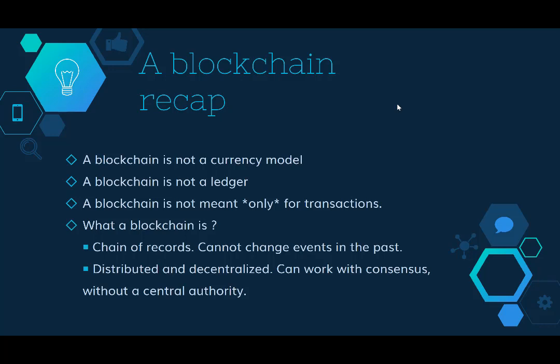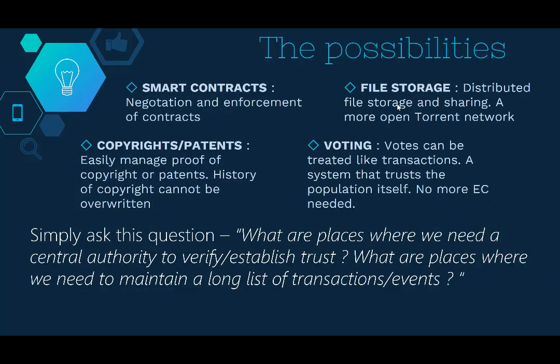A blockchain is simply a chain of events, a chain of records that is distributed and decentralized — meaning anybody can help continue the chain. Ask yourself: where do we need a central authority to verify and establish trust, and where do we need to maintain a long list of transactions or events? Anything that answers yes to both questions is ripe for disruption by blockchain. Examples include voting — votes can be treated like transactions, and after voting you cannot change your vote, enabling a tamper-proof voting system. Similarly, file storage, smart contracts, copyright, and patents can all be built on blockchain.